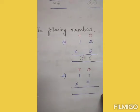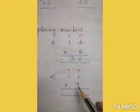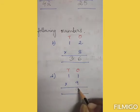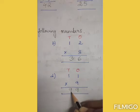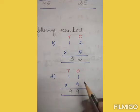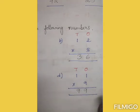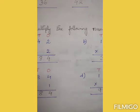Number D: 11 into 9. So 9 ones are 9, and 9 ones are 9. This means 11 into 9 is equal to 99. I have done till number D — the rest will be your homework.